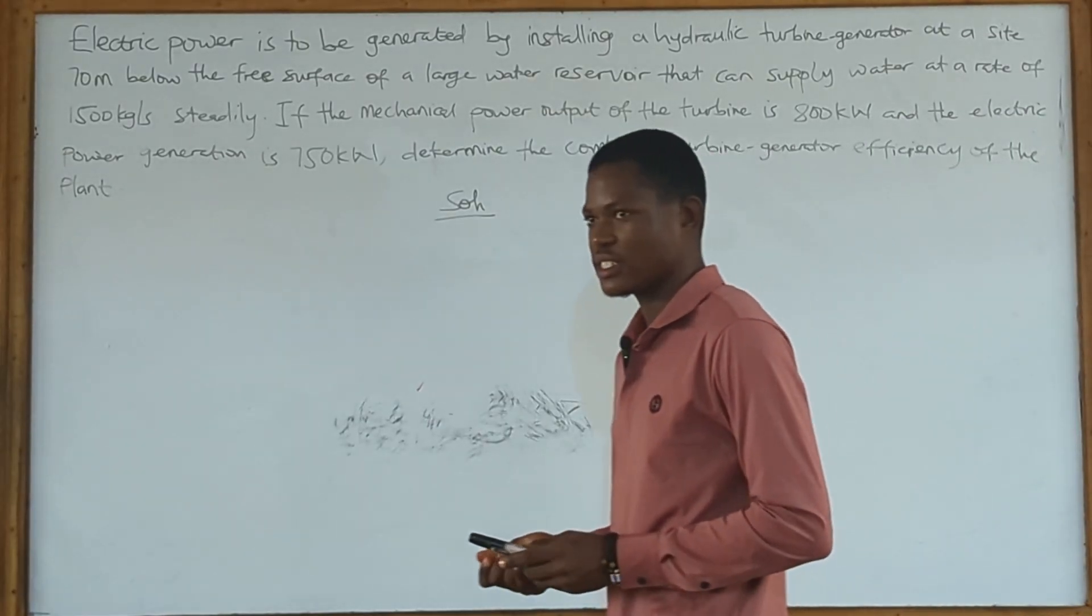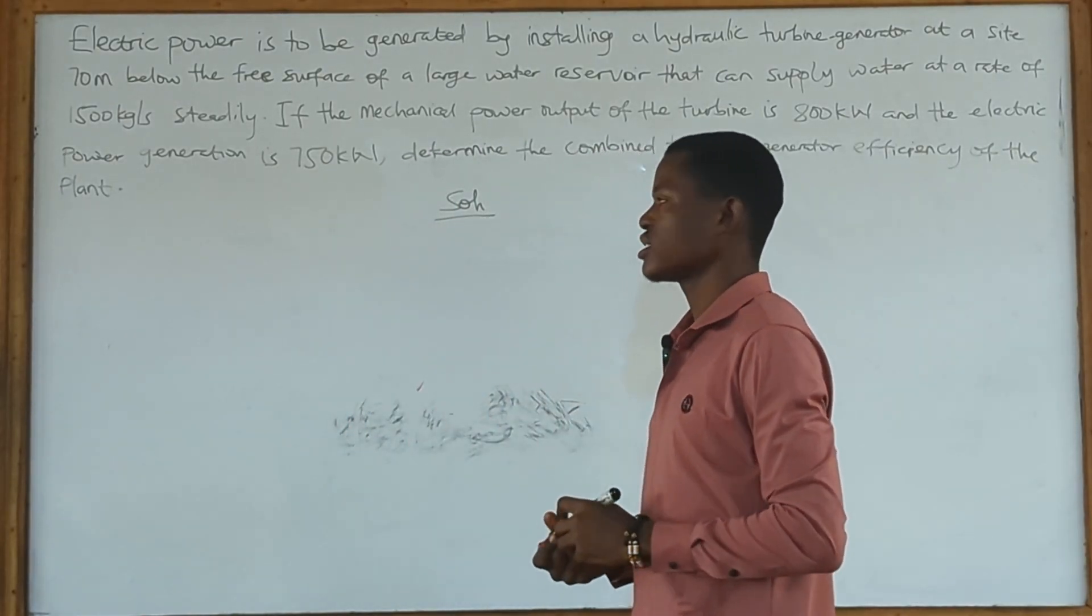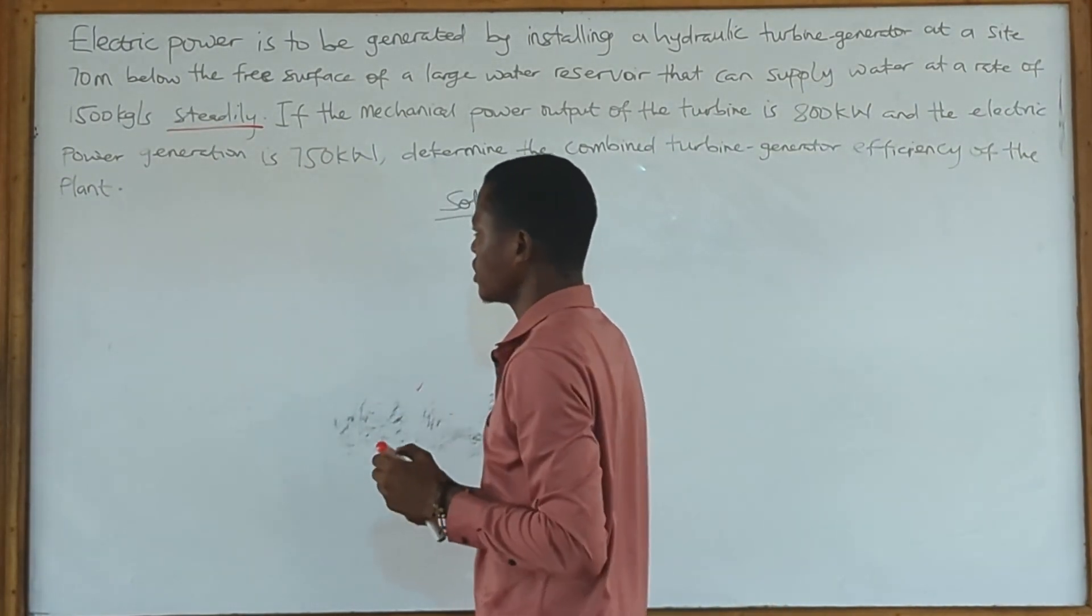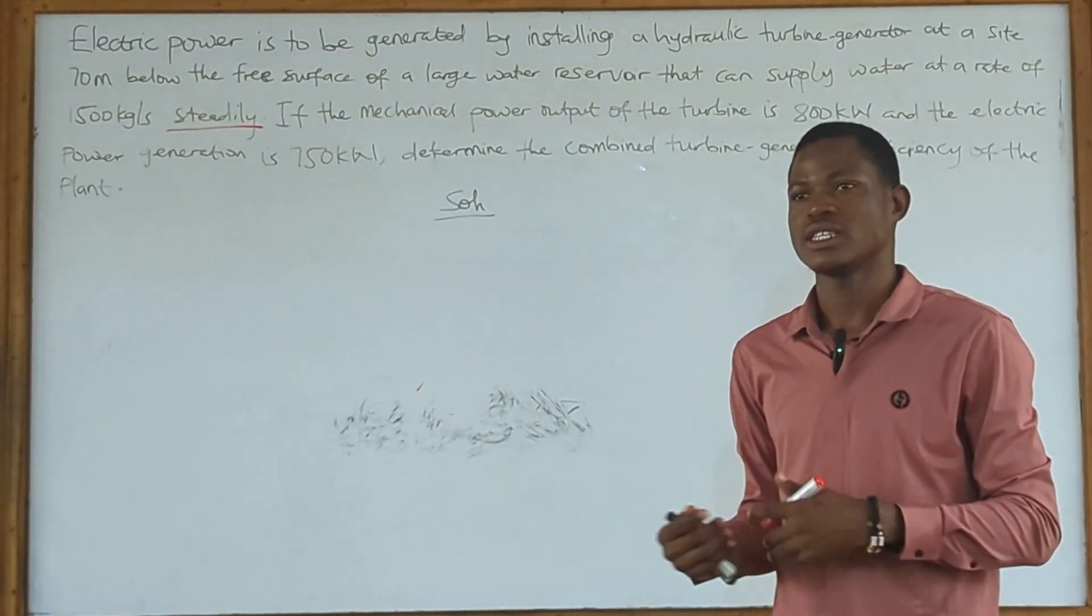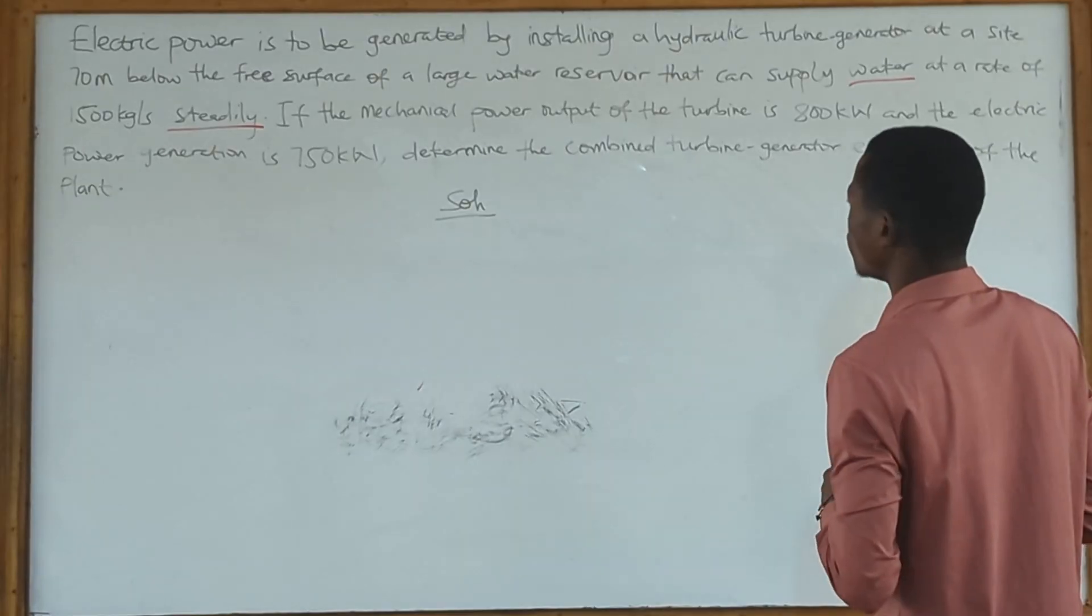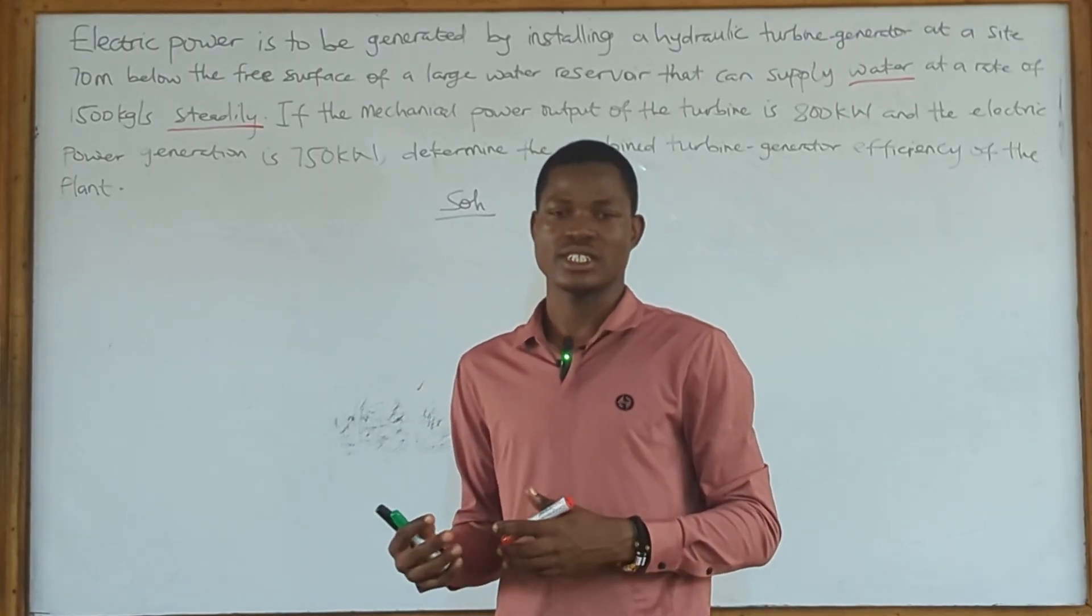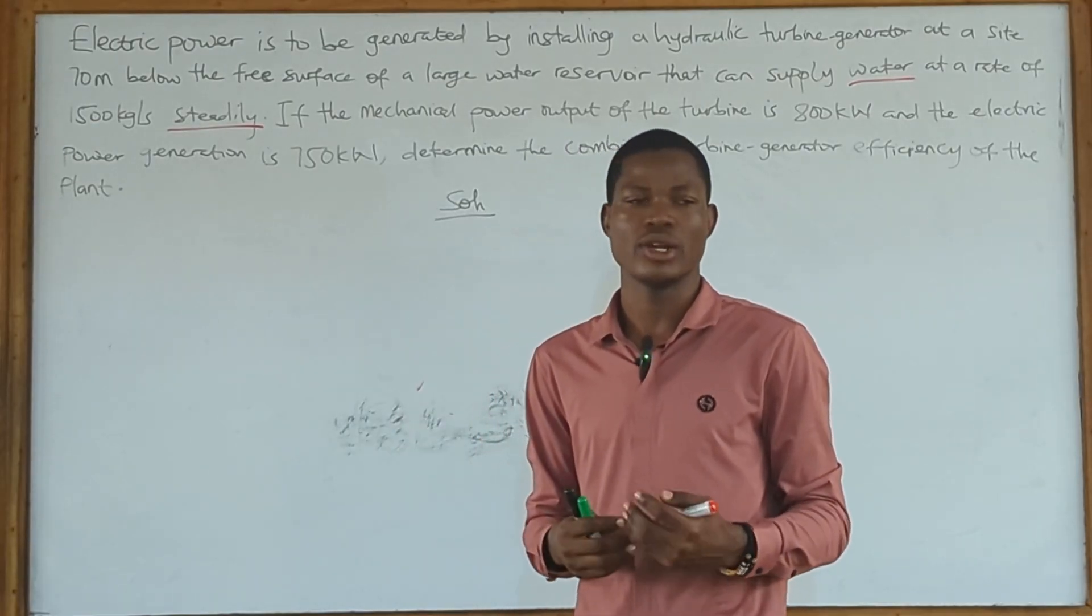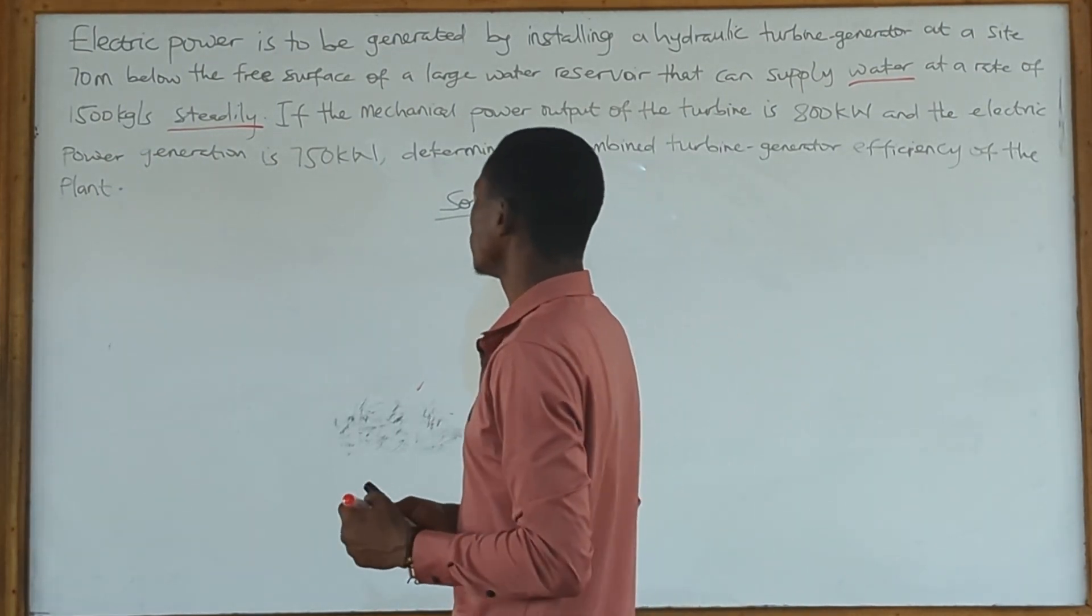We've been given some conditions. Our first condition is a steady state condition. Since it's water, we can assume it's an incompressible flow. We can also neglect friction. With these three conditions, we can use Bernoulli's equation to solve the question.